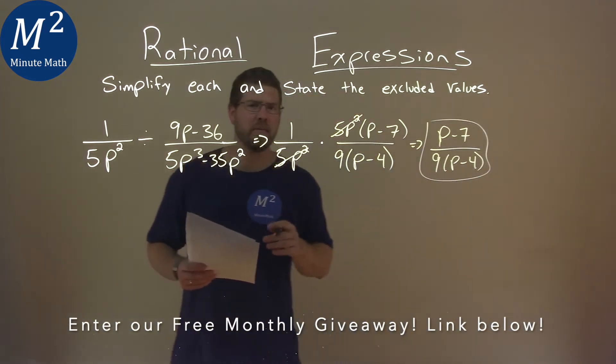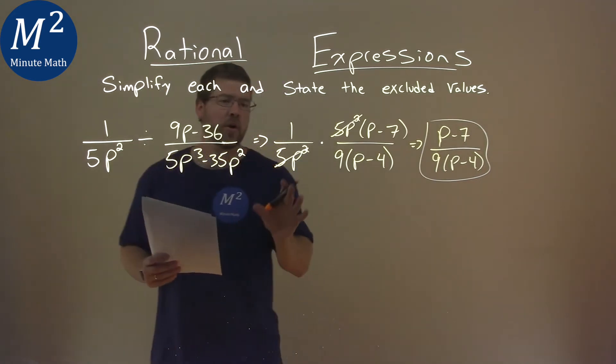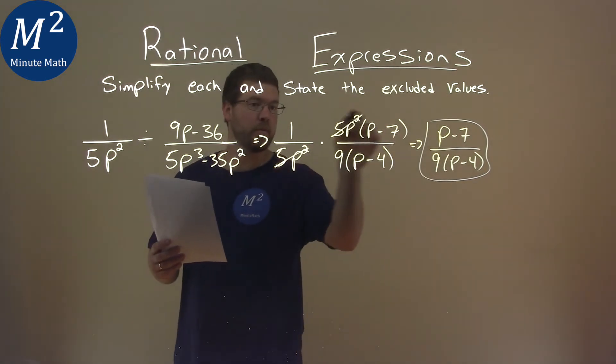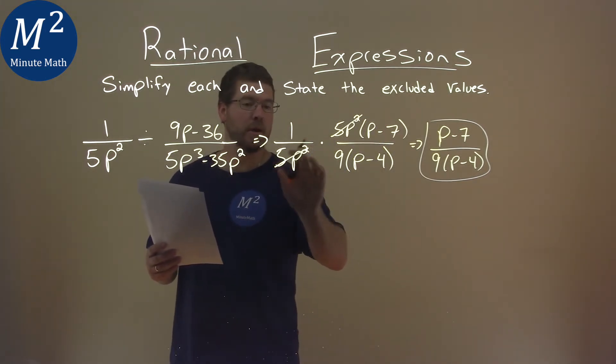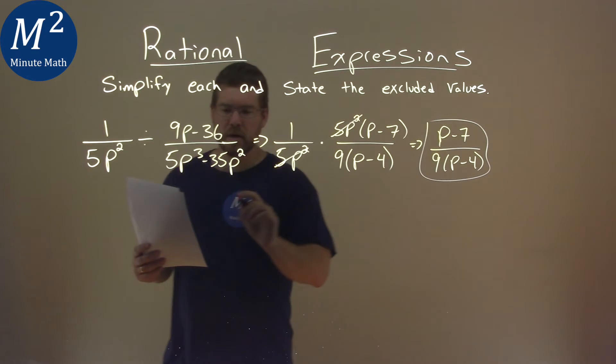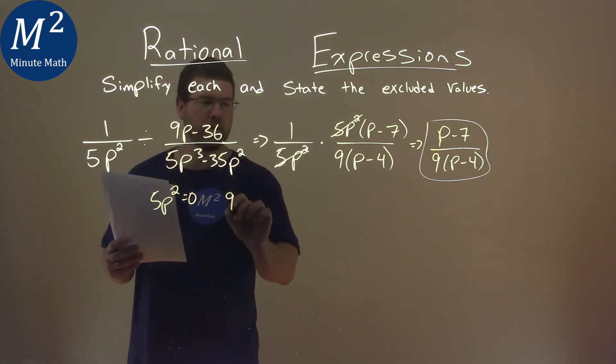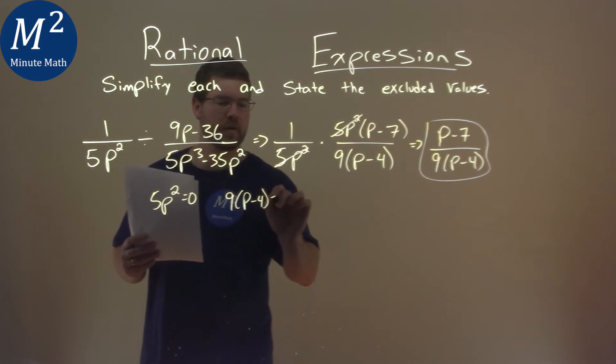But now we have to find the excluded values, and that's when our denominator is going to be equal to 0. So that happens, actually, we're going to look at this part right here being multiplied. We have our denominators. We're going to set the 5p squared equal to 0, and our 9 times p minus 4 equal to 0.